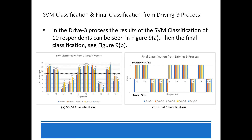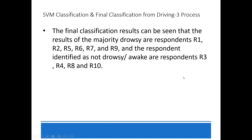In the driving 3 process, the SVM classification results for 10 respondents can be seen in figure 9A, and the final classification results are shown in figure 9B. The final classification shows the majority drowsy respondents were R1, R2, R5, R6, R7, and R9. Respondents identified as awake were R3, R4, R8, and R10.